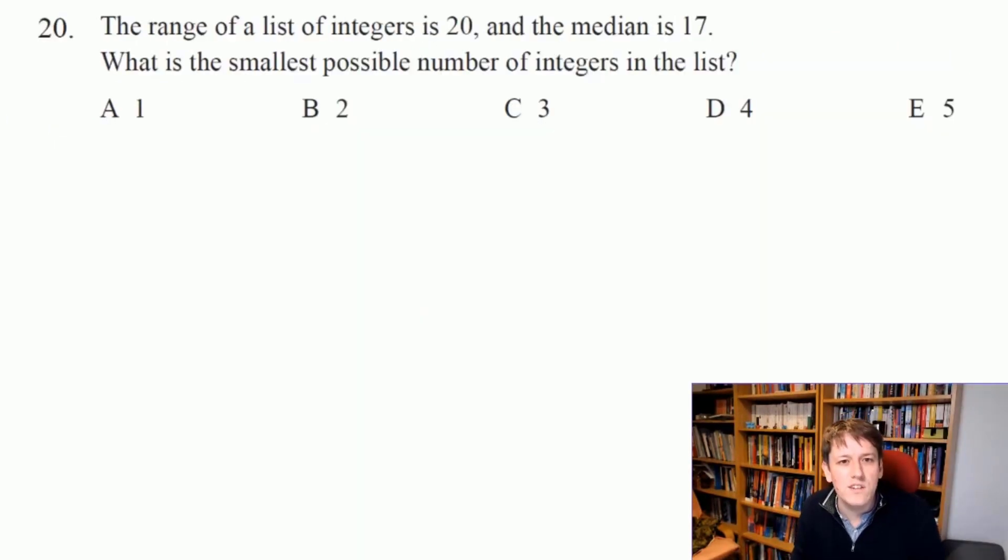So in this question, it says the range is 20 of this list of integers, and the median is 17. And I want to know what the smallest possible number of integers in the list is. So I'm going to start with the smallest possibility here, one, and keep working up, and I'll realize whether they're possible or impossible. So a list of one integer, that would just be a number, maybe it is 17 or something. So the median would be 17, but it doesn't have a range of 20 because the range is the largest number minus the smallest number. So here the range would be zero. So we can't do it with one.